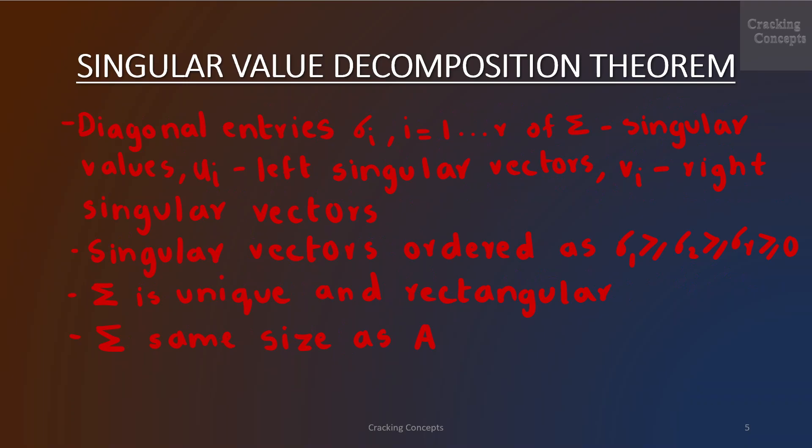The diagonal entries σ_ii, where i ranges from 1 to r of the matrix Σ, are called the singular values. u_i are called the left singular vectors and v_j are called the right singular vectors. By convention, the singular values are ordered: σ_1 ≥ σ_2 ≥ ... ≥ σ_r ≥ 0.